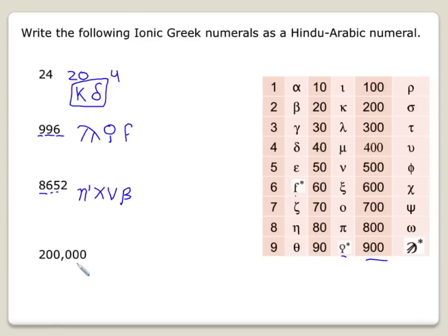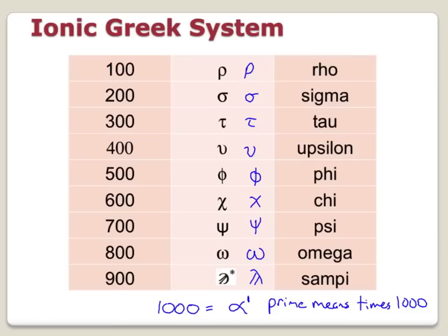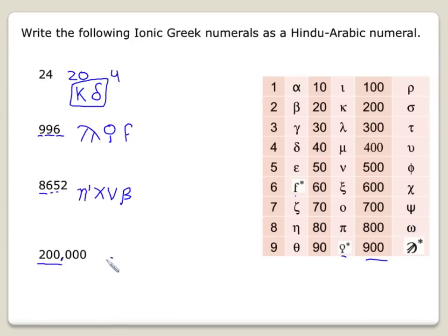And one more here, 200,000. So now, in this case, any time you go into the thousands, you're going to use that prime. So we actually want to take 200 times 1,000. Okay, so we're going to take this sigma right here. What was this one called? Yeah, sigma. So sigma prime for 200,000, and that's it.